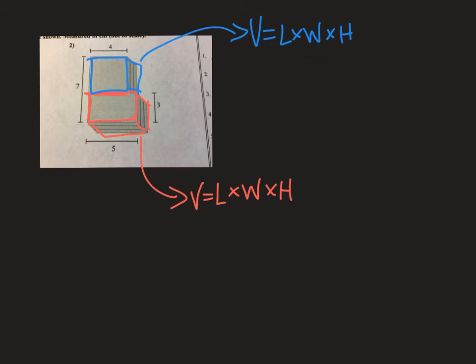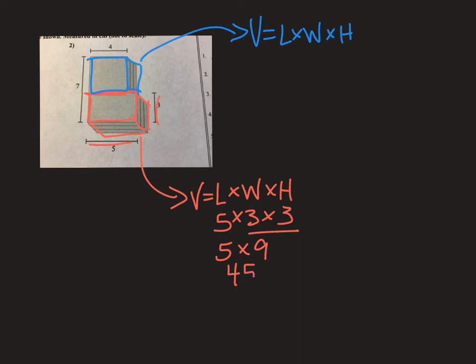I'm going to start at the bottom with the one highlighted in red. The length is 5, the width is 3, and the height is shown in layers — I see 3 layers. From there I determine the volume by multiplying those three dimensions. 3 times 3 is 9, and 5 times 9 is 45. Since this is in centimeters, that makes it 45 cubic centimeters. That little superscript 3 tells us we multiplied three dimensions.